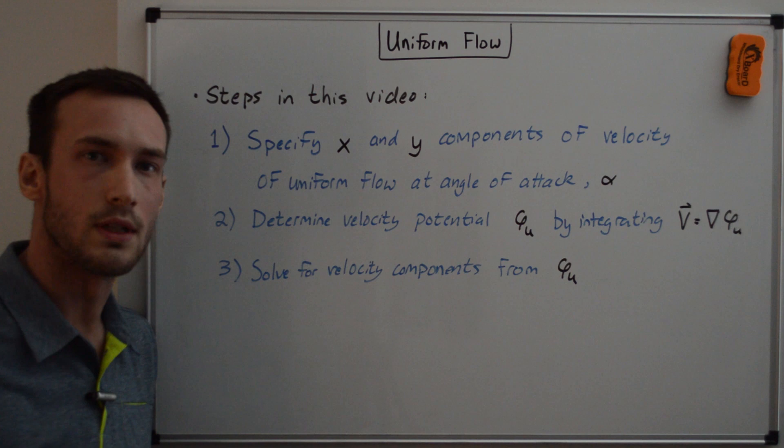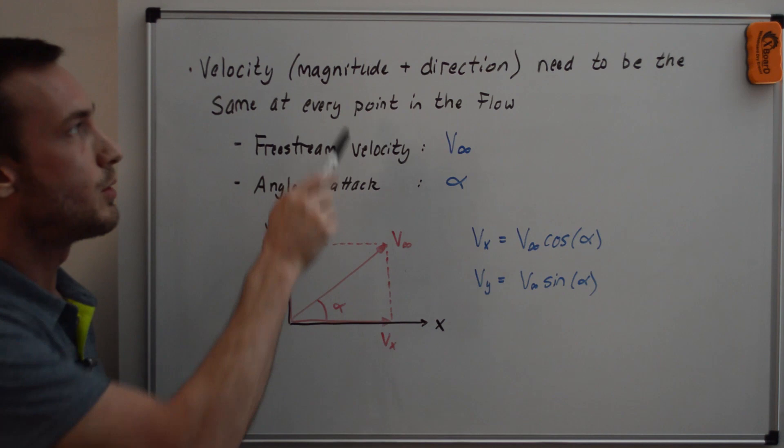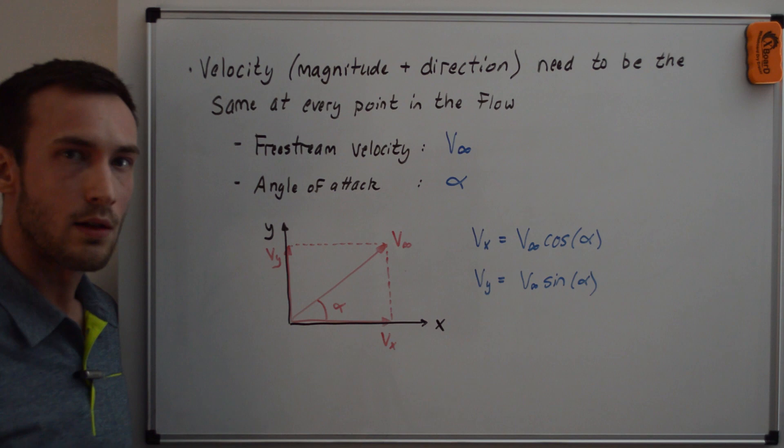Because the flow is uniform, the velocity, including the magnitude and direction, needs to be the same at every single point in the flow. So we're going to define the freestream velocity, which is the magnitude, as v infinity, and we'll define the angle of attack, which is the direction, as alpha.